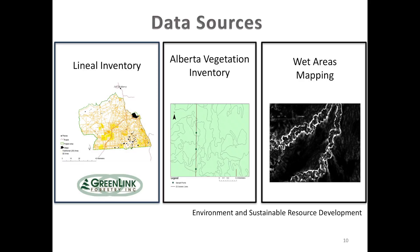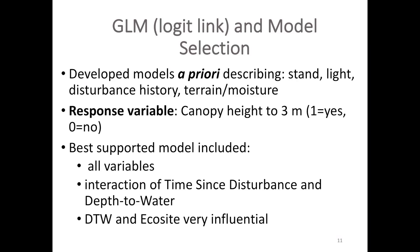The data sources for these predictor variables included a lineal inventory done by Greenlink Forestry, AVI data which gave information about eco-site, and wet areas mapping data which we're all very familiar with by now. From there, I a priori selected a number of different models describing things like stand, light, disturbance history, or terrain moisture.